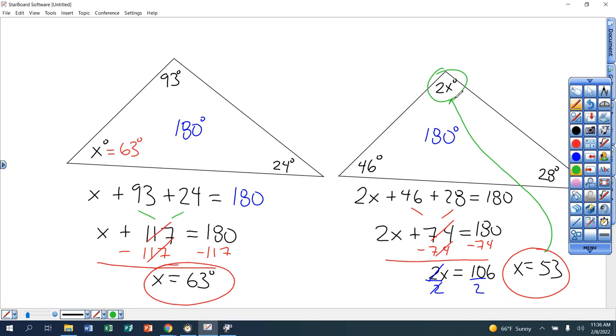Because if I'm saying solve for x, for that problem, x is 53. But if I say, give me the angle, you've got to take that 2, take that 53, times it.